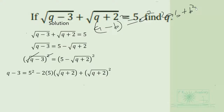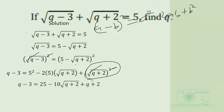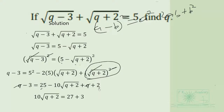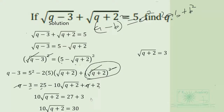After squaring, note that terms not covered by the square root can have their root removed directly. We simplify by grouping: the Q terms cancel, 25 and 2 give 27, and negative 3 adds to 27. Dividing through by 10 gives √(Q + 2) = 3, and we square both sides again.